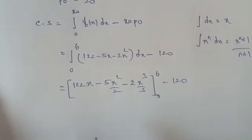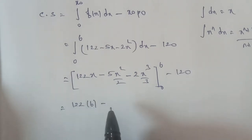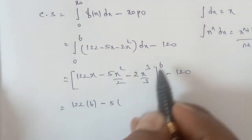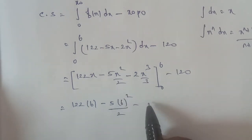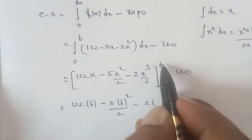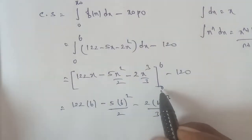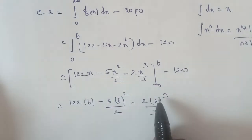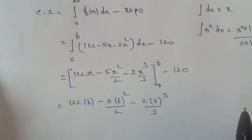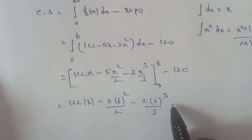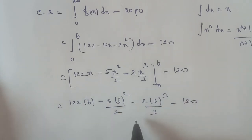Applying the upper limit: substitute x equal to 6. We get 122 times 6, minus 5 times 6 squared divided by 2, minus 2 times 6 cubed divided by 3. For the lower limit, all terms become zero since x equals 0, so nothing remains from the lower limit.